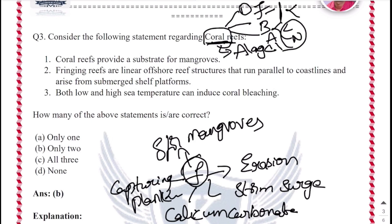Let us now understand why coral reefs get bleached. The cause of coral bleaching is related to temperature. Coral species live within a relatively narrow temperature margin. Anomalously low and high sea temperatures can induce coral bleaching, and bleaching is more frequently reported from elevated sea water temperature.